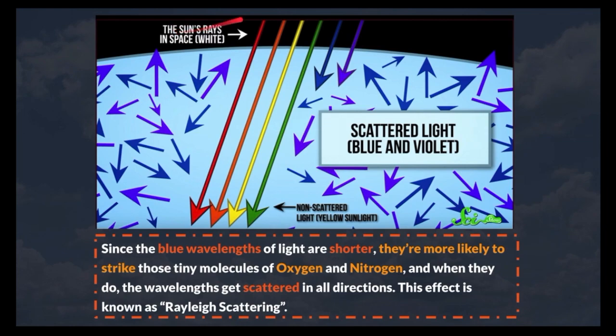The sun's rays are actually white in space, so this is a visual error in the illustration. Anyways, this is scattered light. You can see the blue and violet wavelengths are getting scattered everywhere in the atmosphere.